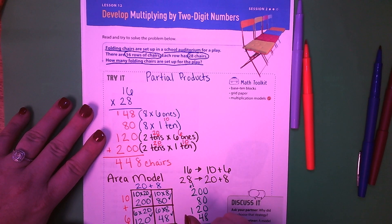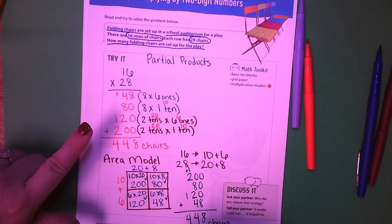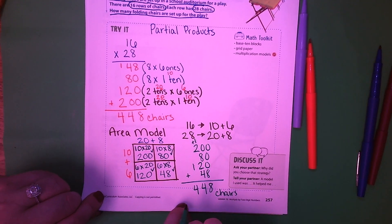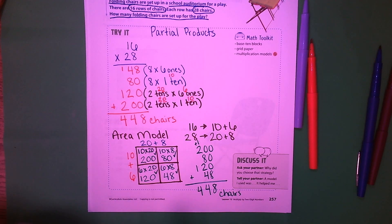0 plus 8 is 8, 8, 9, 10, 11, 12, 13, 14. 2, 3, and 4. So 448 chairs, which is the same thing that I got up here. Oh, I'm sorry. Didn't realize you couldn't see. 448 chairs, which is what I got up here. And you can see my work there.